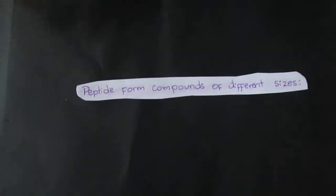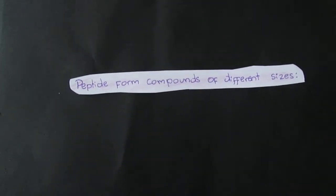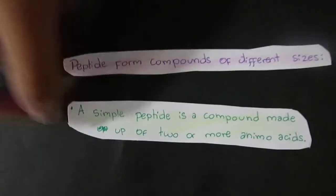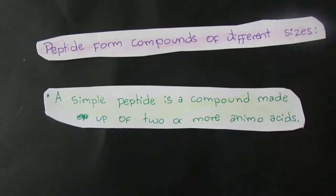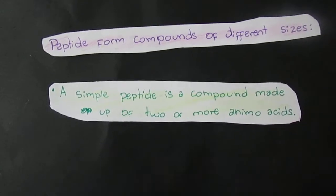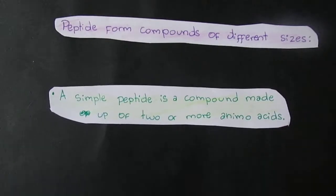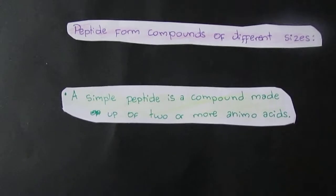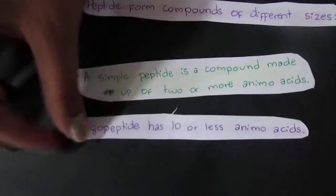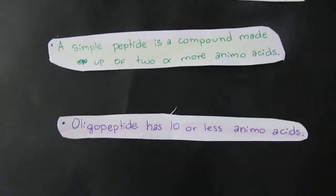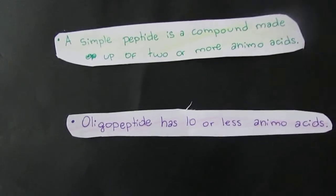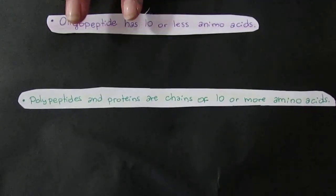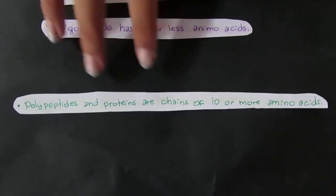Peptide bonds form compounds of different sizes. A simple peptide is a compound made up of two or more amino acids. Oligopeptides have 10 or less amino acids, and polypeptides have 10 and above amino acids.